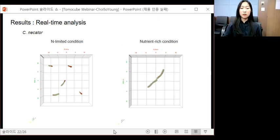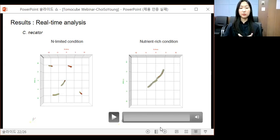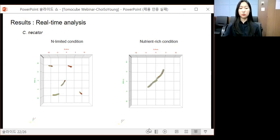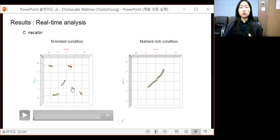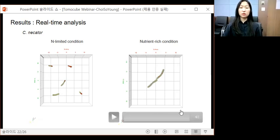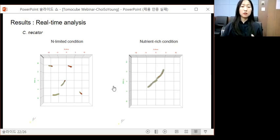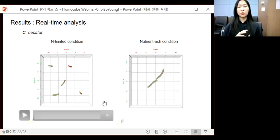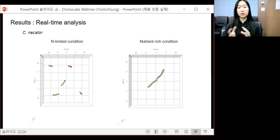For C. necator cells, we obtained two movies for different culture media. One is nitrogen source limited, and the other is nutrient rich medium, which contains sufficient nitrogen source. The two conditions differ in that nitrogen limited is good for PHA production, but nutrient rich condition is good for cell growth rather than PHA production. The movie shows the actual in vivo dynamics of PHA granule synthesis and degradation in living cells, even considering the possible existence of small optical perturbation caused by the cell movement.